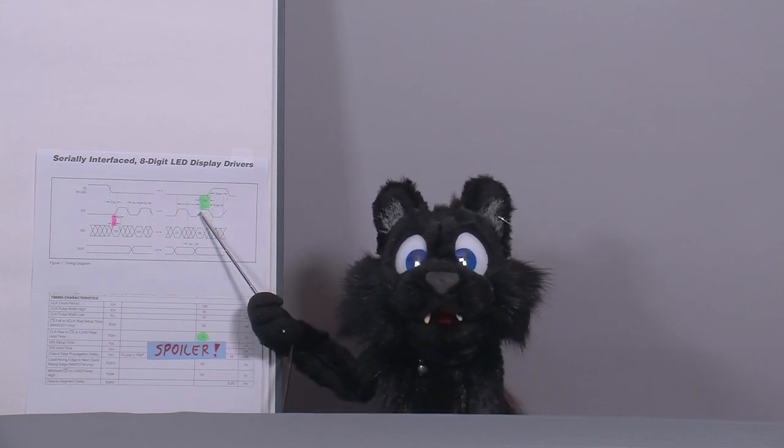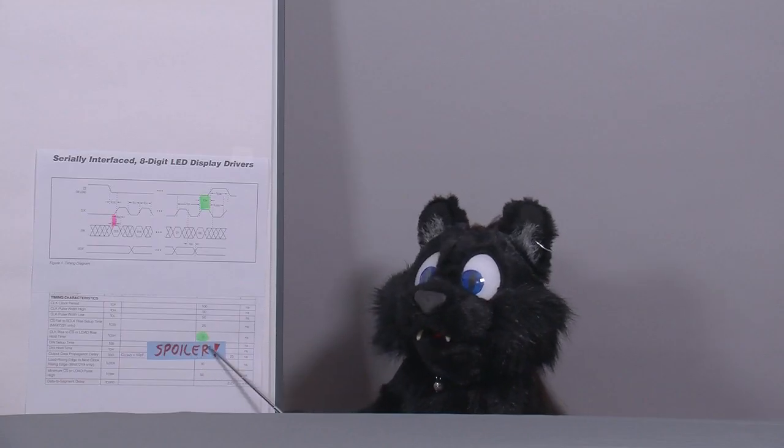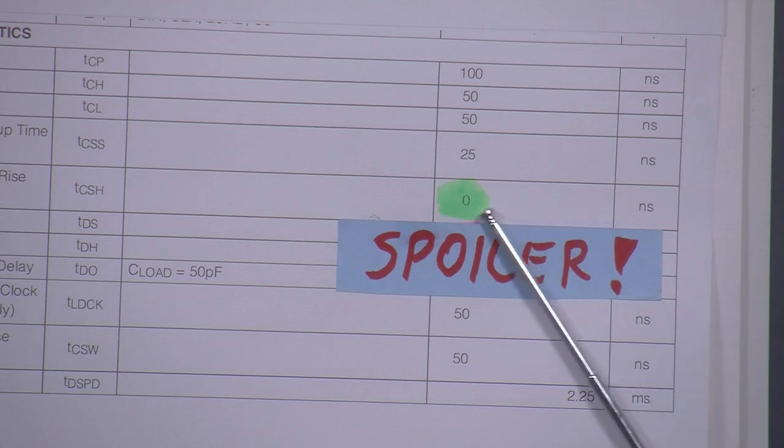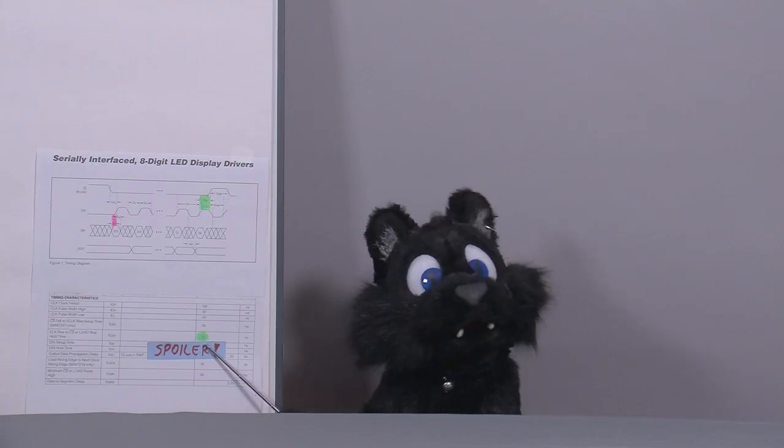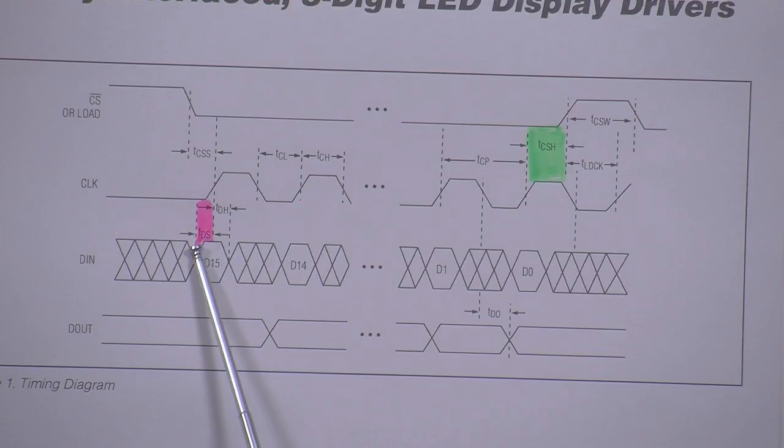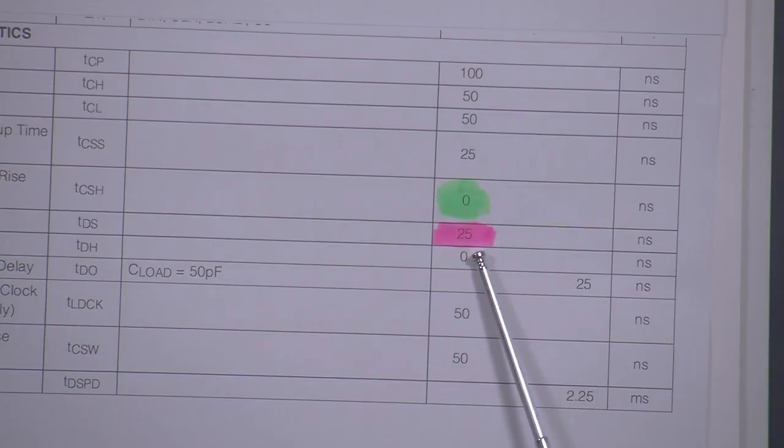was too quick after the last clock. But the time between clock high and load is given as zero nanoseconds. So, can't really be too fast. But there's also a TDS value. Time between data bit set and clock signal. And that is 25 nanoseconds. When I was bit banging with the Arduino, the digital write commands were done one after the other, so there was enough time.